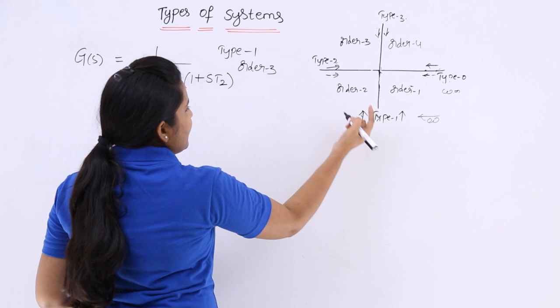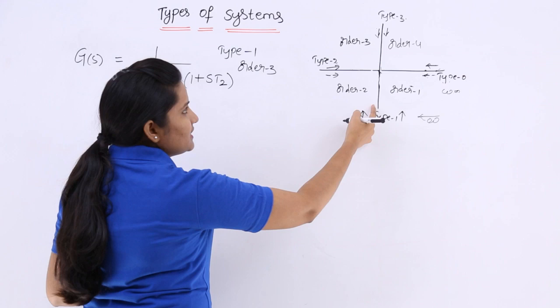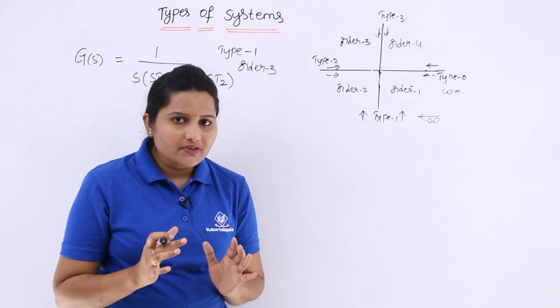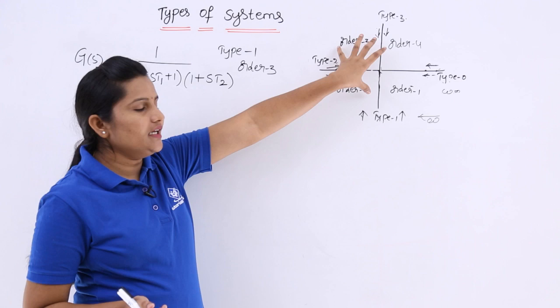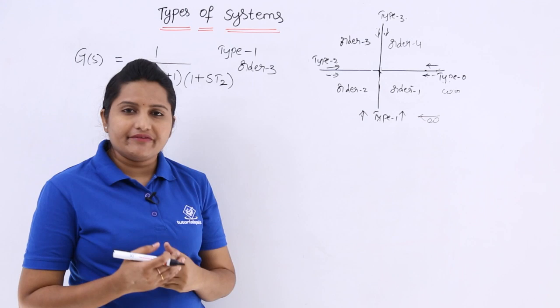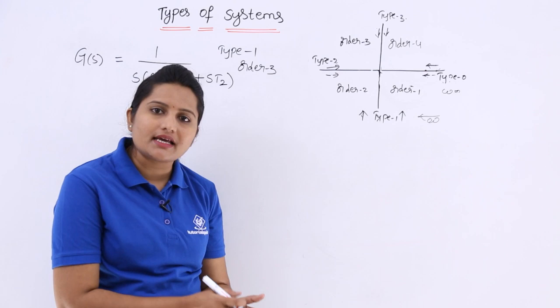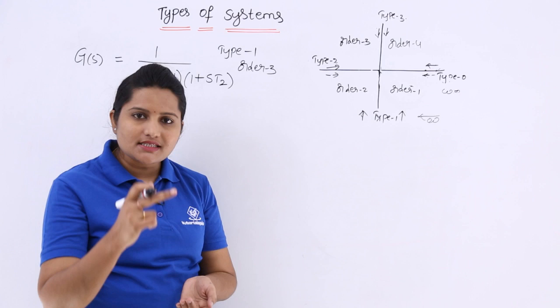For type 1, order 3, the polar plot starts at one coordinate and ends at another. If you are writing a technical exam, you can use this tracing method from the options. The general method to draw the polar plot or Nyquist plot is to calculate the magnitude and phase of the transfer function, and that magnitude versus phase plot is called the polar plot.